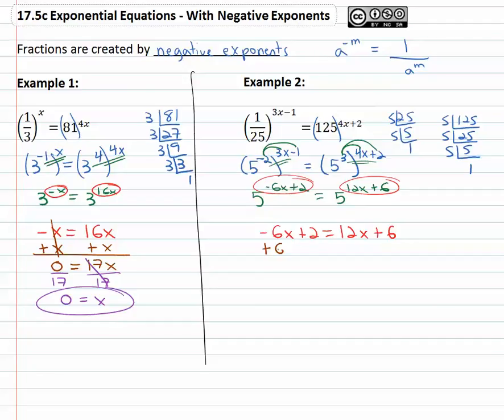Solving then, get the variable on one side by adding six x to both, gives us two equals eighteen x plus six. Two step equation, subtracting six from both sides, negative four equals eighteen x. And finally, dividing both sides by eighteen, x is equal to the reduced fraction, negative two ninths.